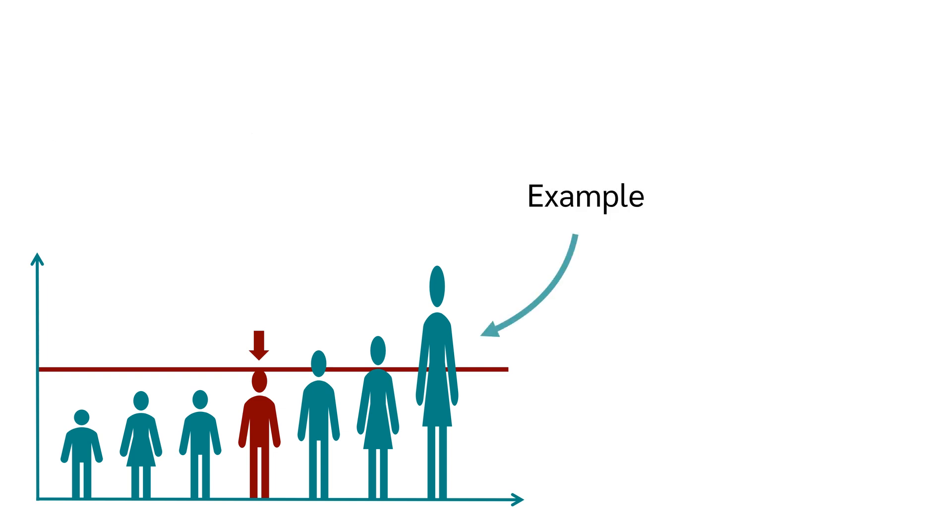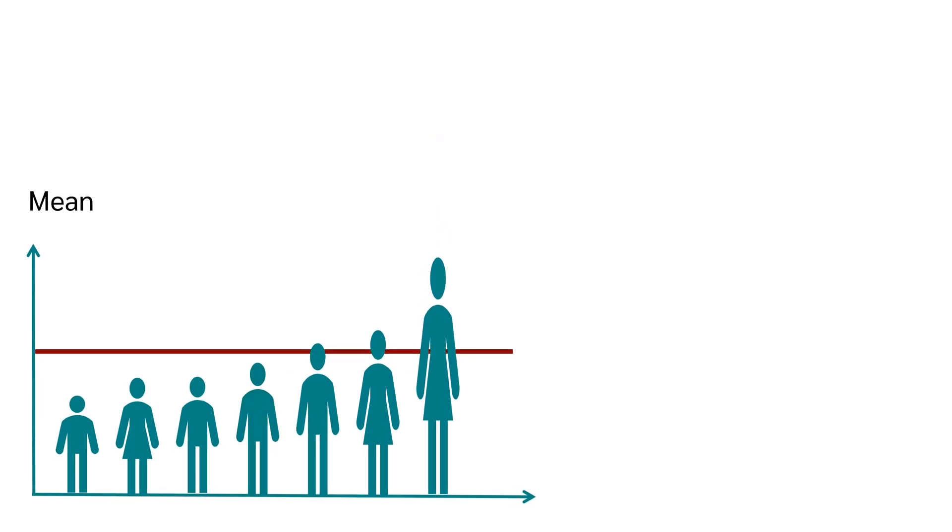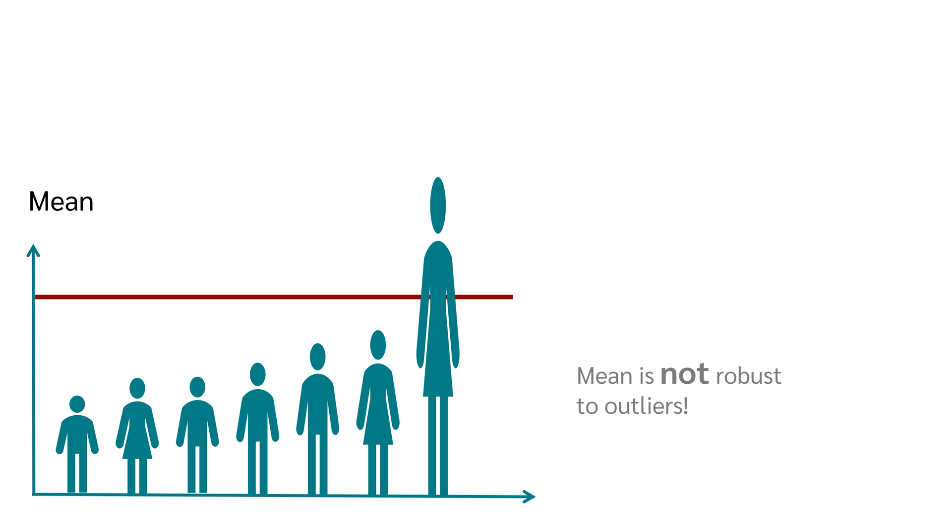Let's look at this example. No matter how tall the last person is, the person in the middle remains the person in the middle. So the median does not change. But if we look at the mean, it does have an effect on how tall the last person is. The mean is therefore not robust to outliers.